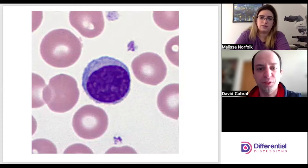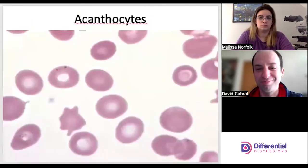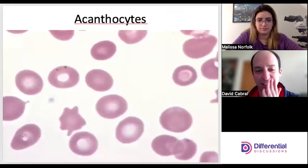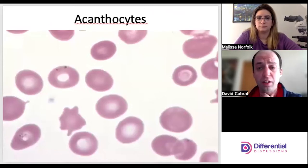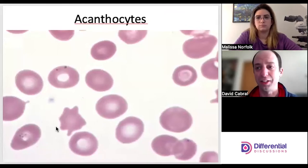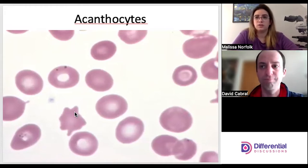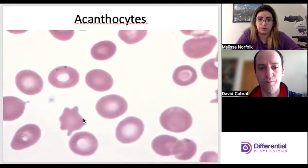Now that we've taken a look at normal red cells, let's look at some of the abnormal shapes — the fun stuff. Acanthocytes have uneven projections — they're commonly confused with echinocytes, which we'll get to later. Acanthocytes have uneven projections all the way around; some are larger, some are wider, some are really small, and some areas are completely flat. Pretty classic acanthocytes.